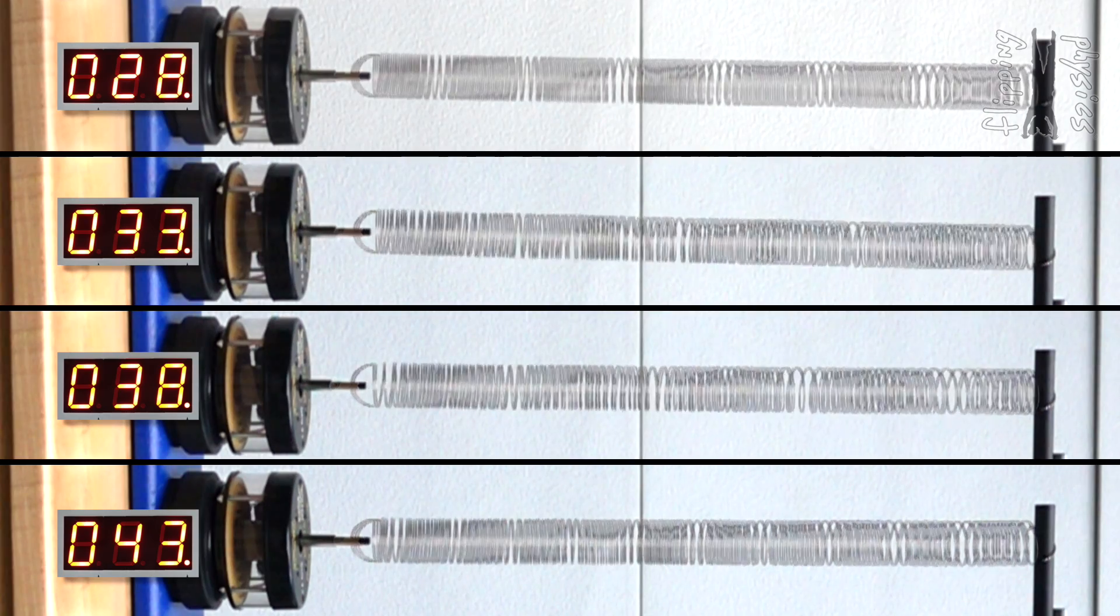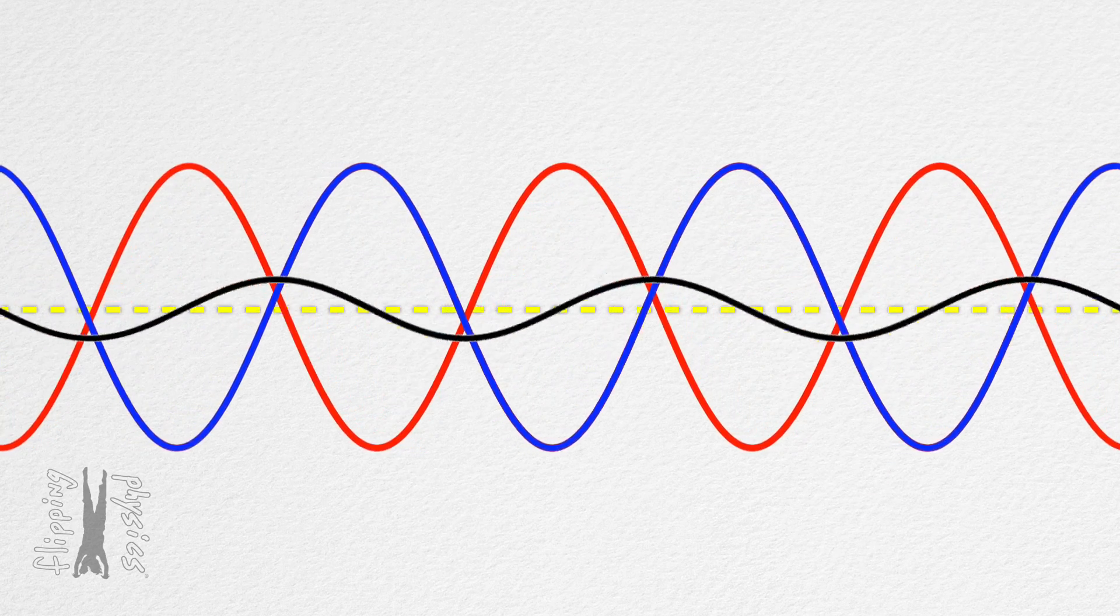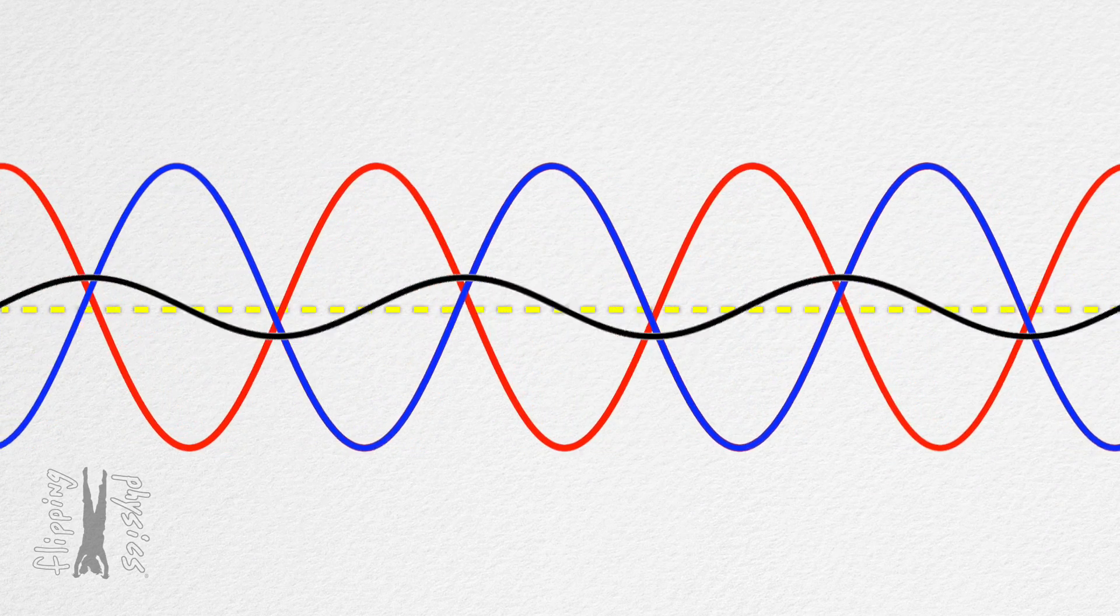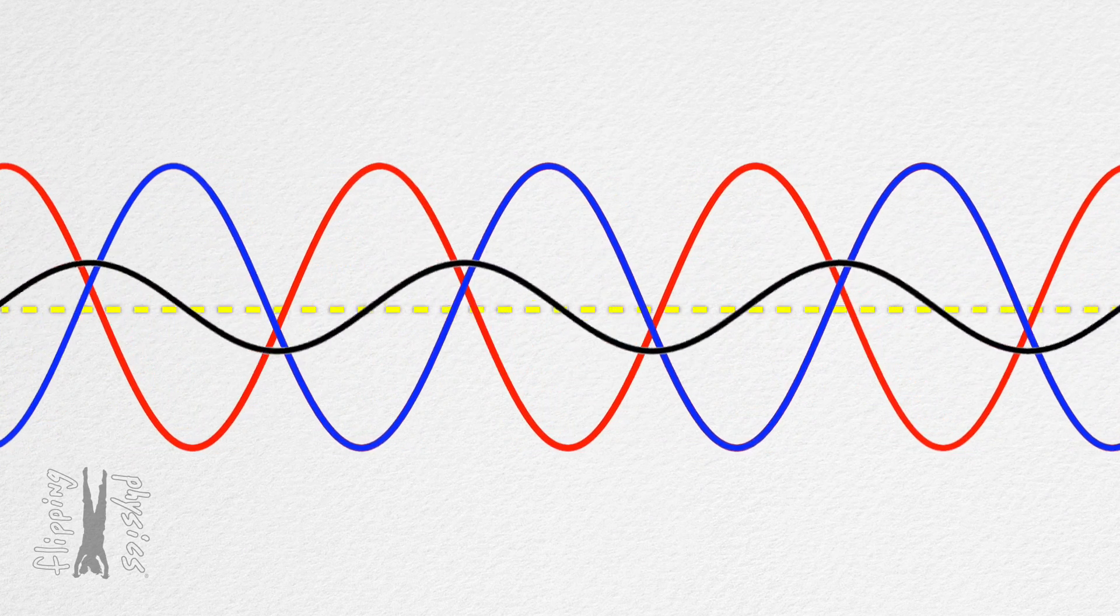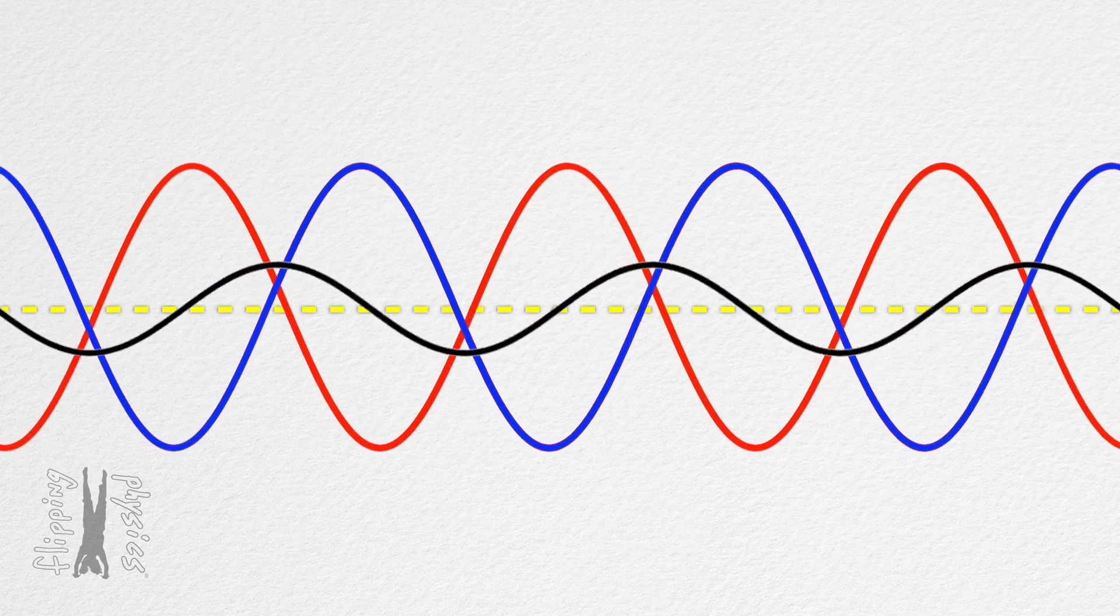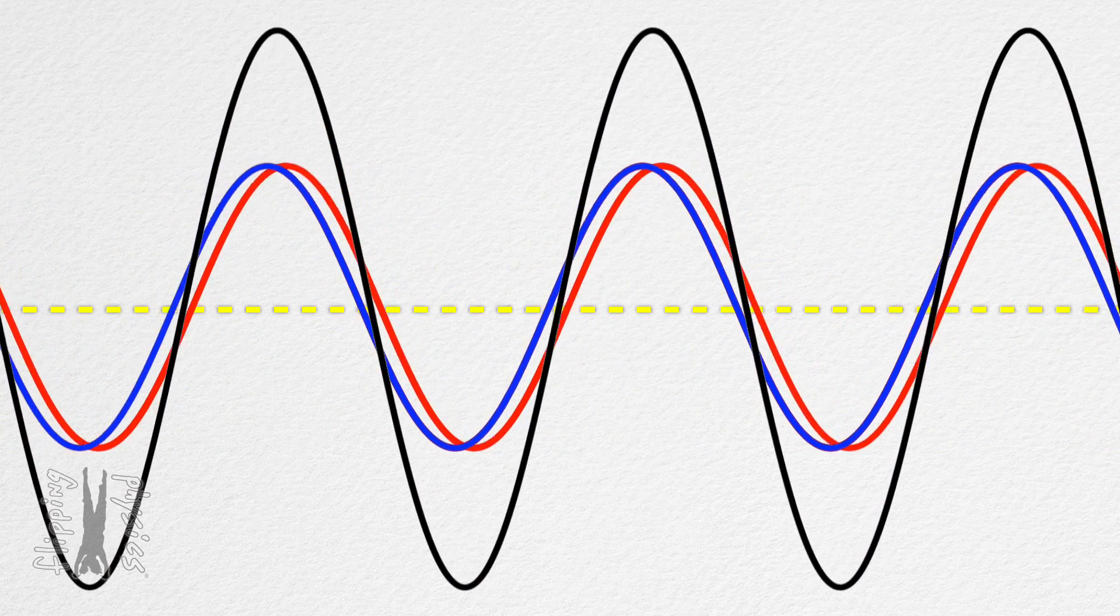Maybe we should go back to that standing wave animation with the blue and red waves constructively and destructively interfering to create the standing wave pattern? Good idea, Bobby. Bo, remind me of what the blue, red, and black waves represent.